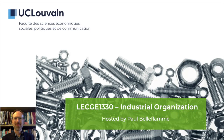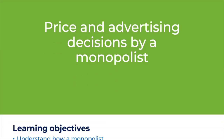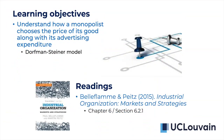Hi there, I'm Paul Belflem and this is Industrial Organization. In this presentation we want to take a few minutes to analyze price and advertising decisions by a monopolist. The learning objectives are to understand how a monopolist chooses the price of its good along with its advertising expenditure. We will analyze the model due to two economists, Dorfman and Steiner, and if you want some background reading you can read section 6.1 in the textbook.